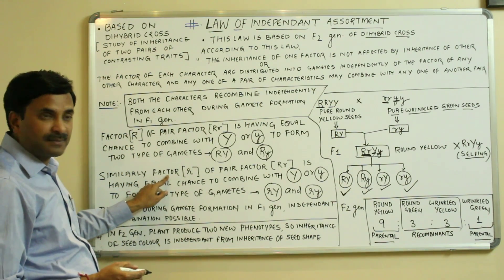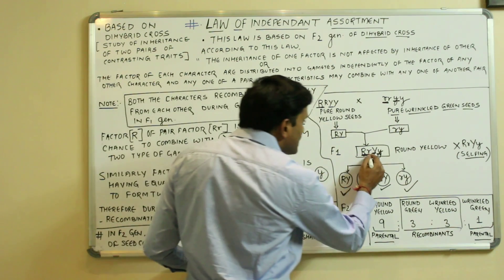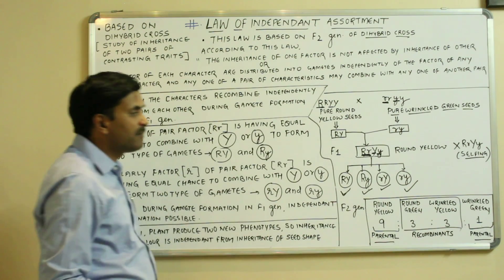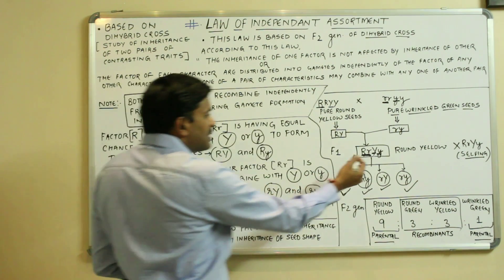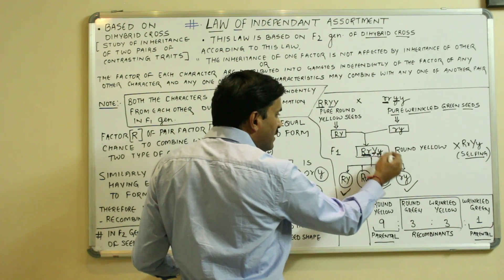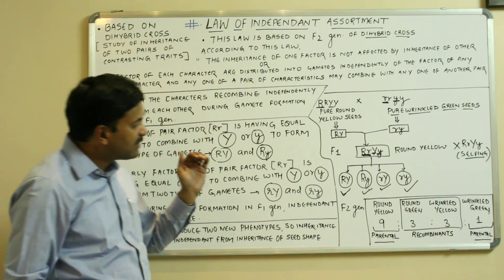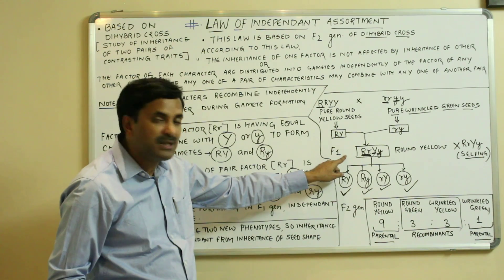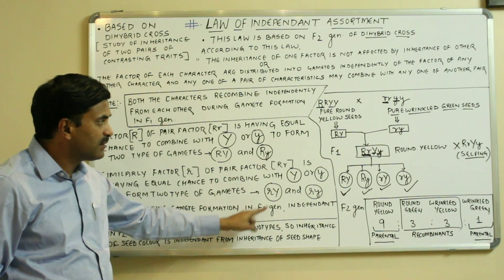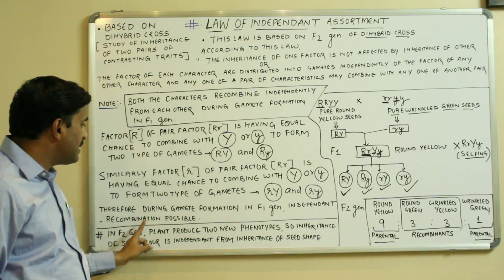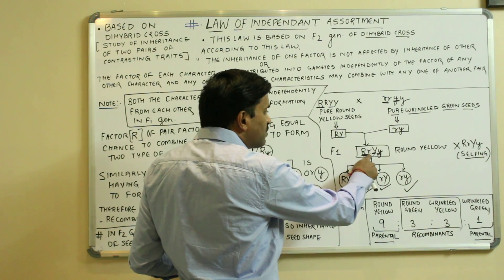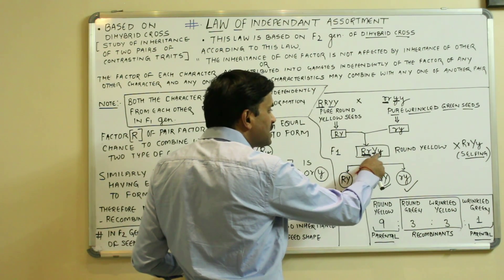In the same way, the factor small r of the pair (capital R, small r) also has an equal chance to combine with capital Y and small y. When small r combines with capital Y it forms the gamete small r capital Y, and when small r combines with small y it forms small r small y. Therefore, from the F1 genotype we can produce four types of gametes. During gamete formation in the F1 generation, independent recombination is possible — both capital R and small r have equal chance to combine with capital Y and small y.